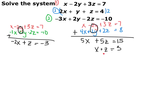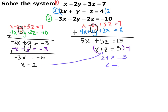Now we have a system of two equations with two unknowns: negative 2x plus z equals negative 3, and x plus z equals 3. Go ahead and pause the video and solve this system for x and z. I multiplied x plus z equals 3 by negative 1 to get negative x minus z equals negative 3, then added to eliminate z. You get negative 3x equals negative 6, so x equals 2. Plugging in: 2 plus z equals 3, so z equals 1.